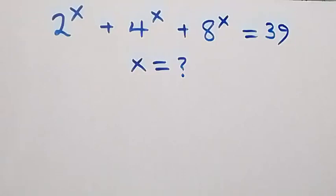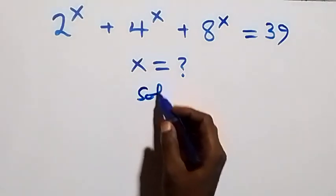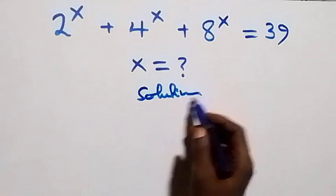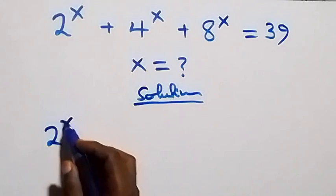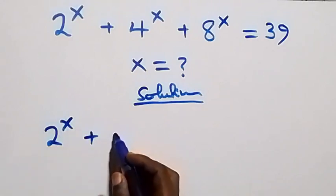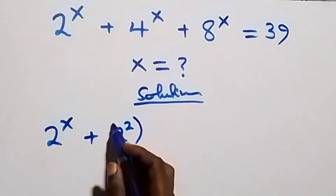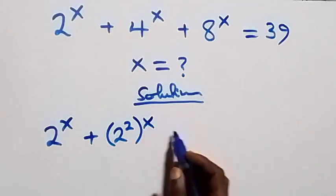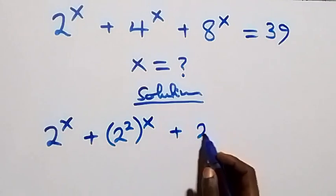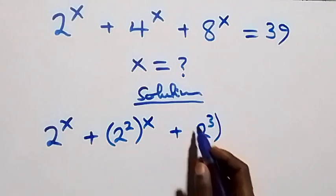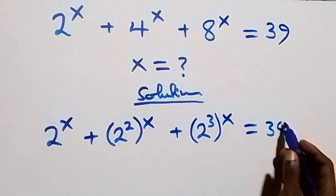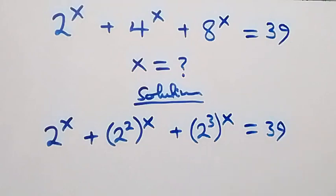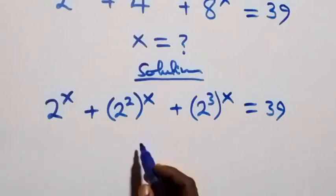Hello, you're welcome. How to solve this nice exponential equation. From what is given, we can rewrite this as two raised to power x, plus two squared raised to power x, plus two cubed raised to power x, equals 39.